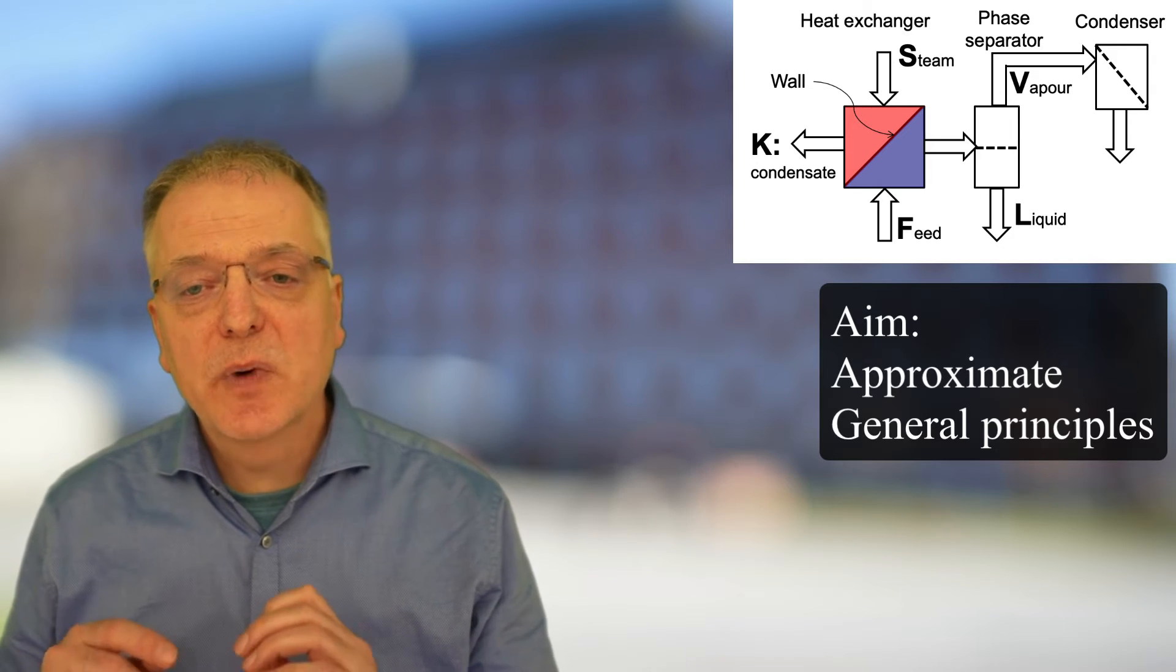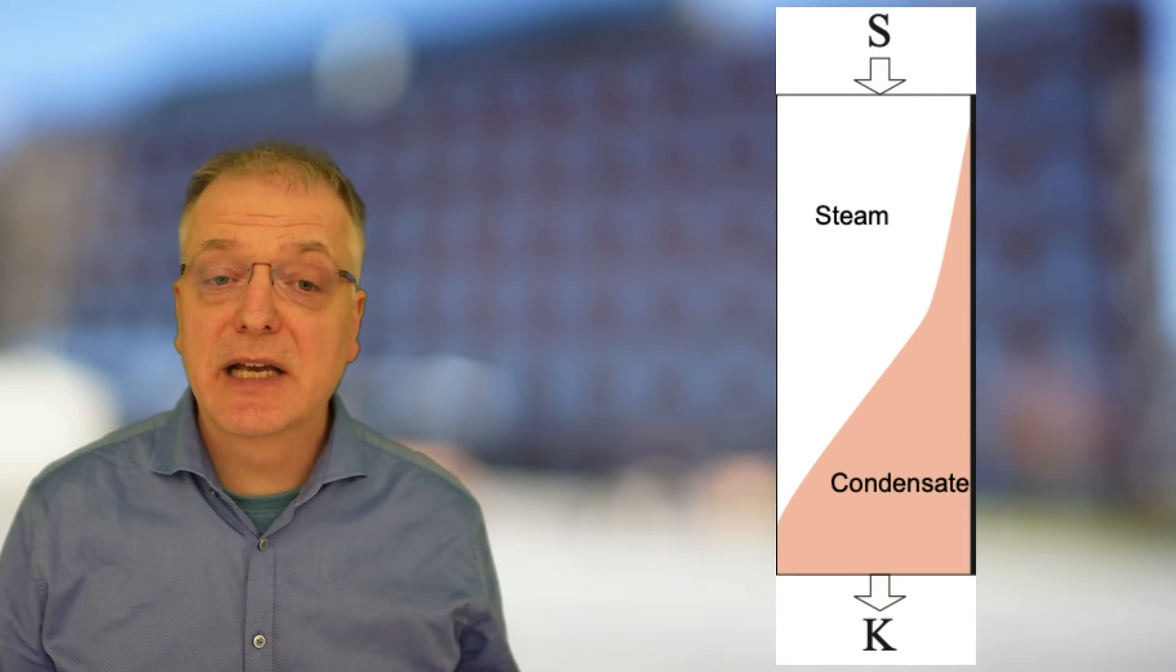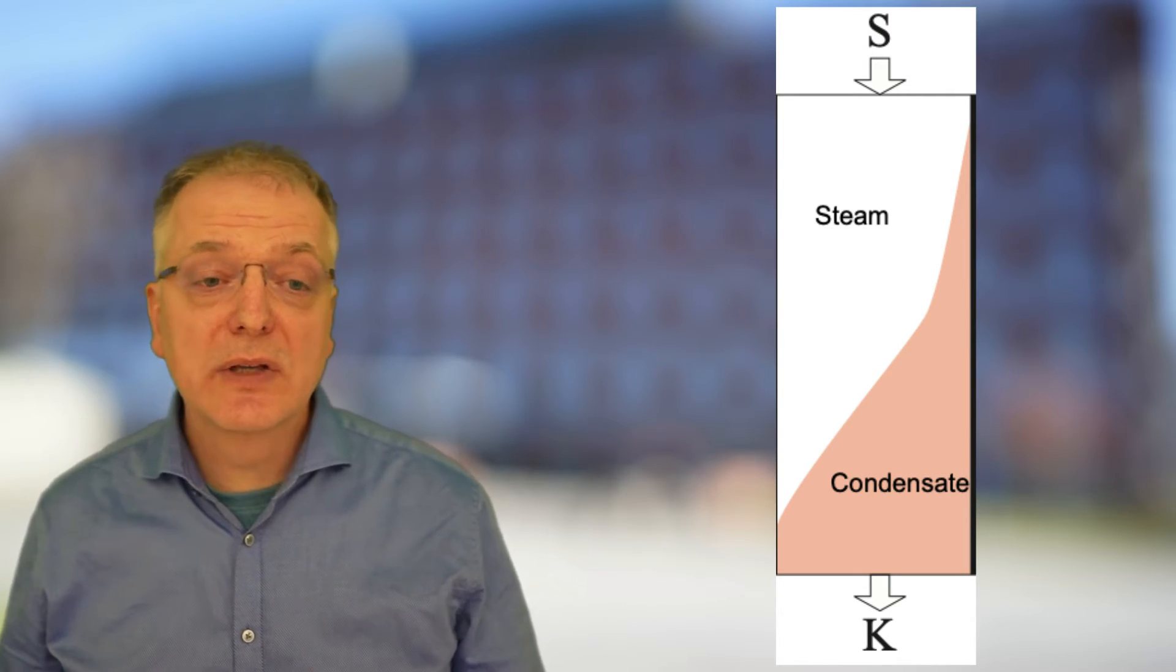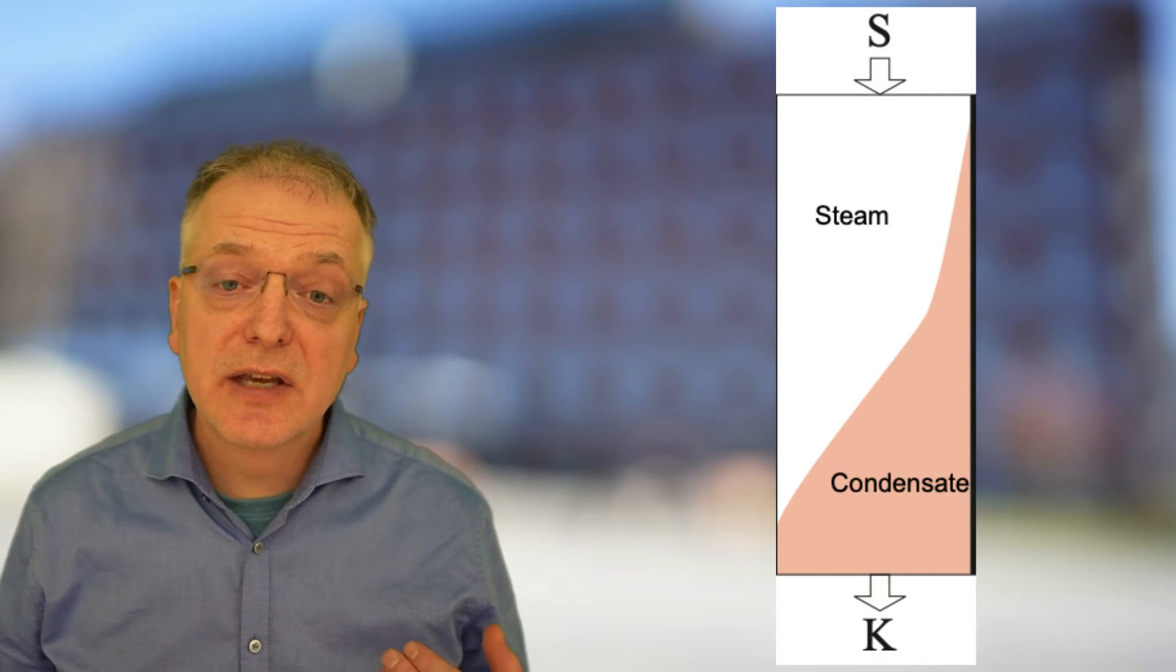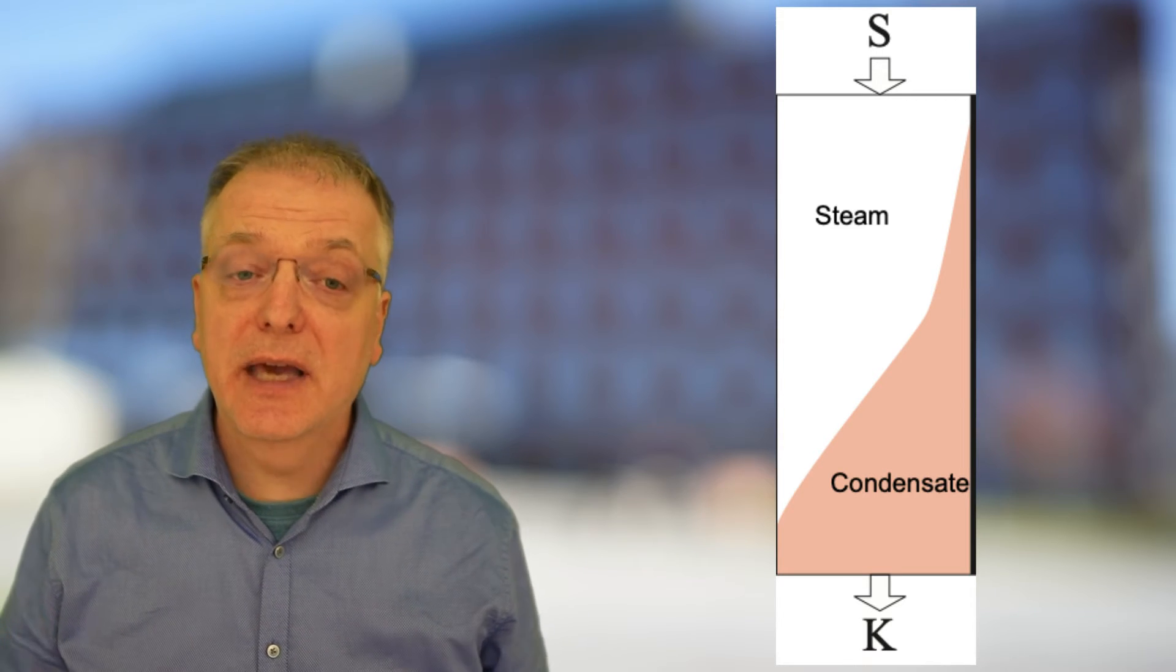So let us think about what happens on the two sides of the heat exchanger. On the hot side, you have steam coming in as a gas, gradually condensing along the heat exchanger such that the entire steam flux S turns into condensate liquid flow K.